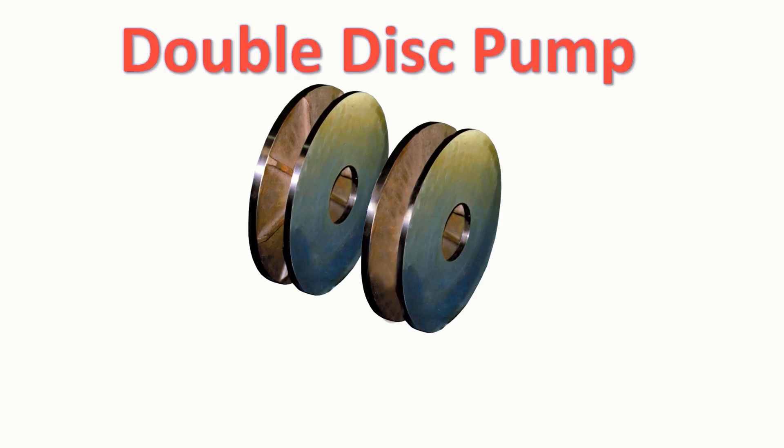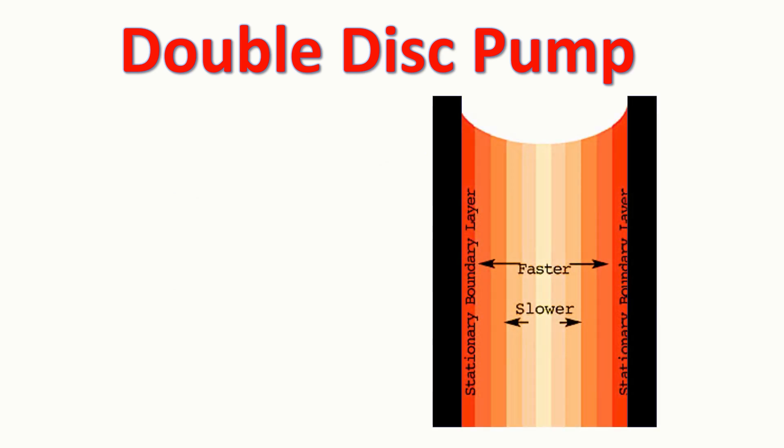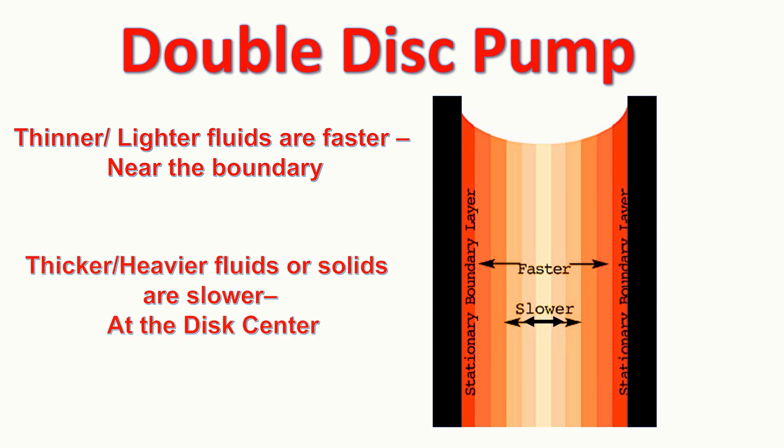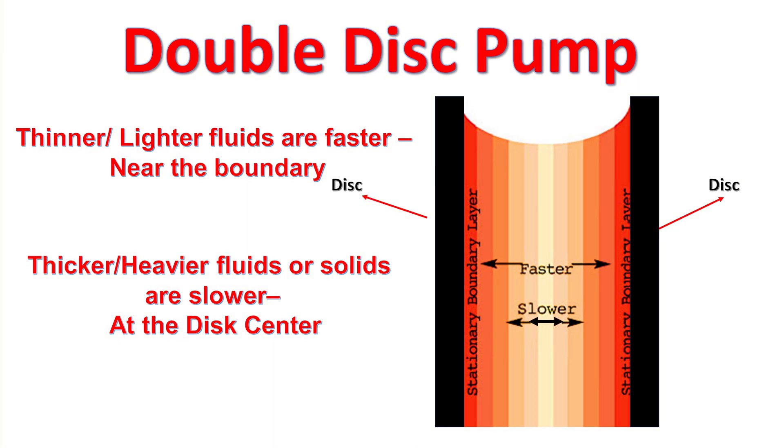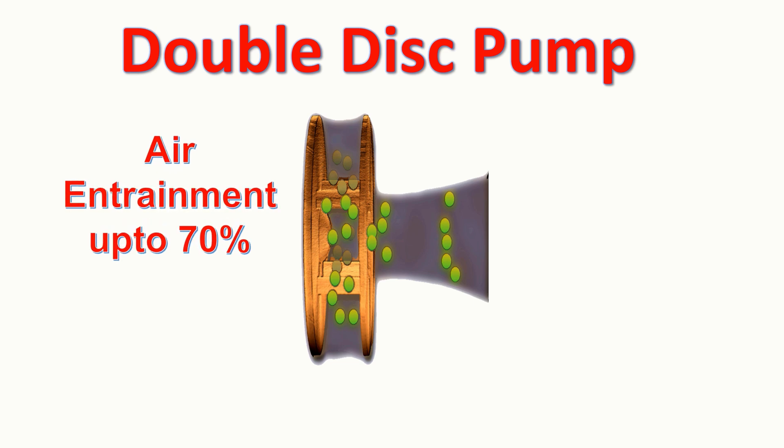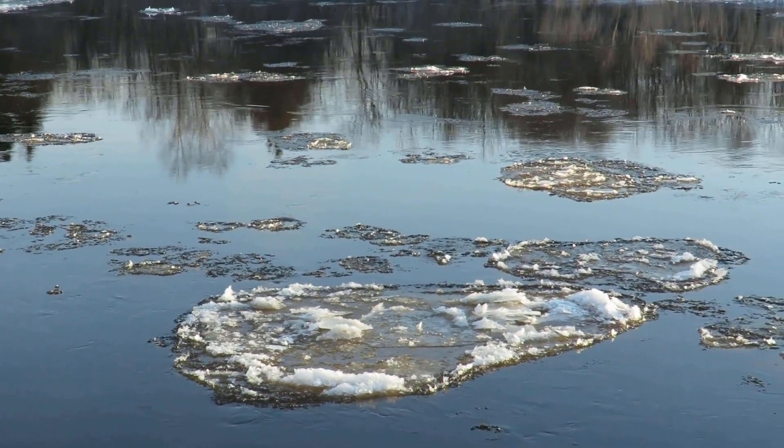Double disc pump. This four-decade-old technology pump uses viscous drag and boundary layer concept to pump the liquid. Boundary layer formation ensures that the thinner fluids or gases are nearer to the disc and thicker fluids go through the center of the disc. Due to this partition, these pumps are very effective in controlling the air entrainment up to 70% in volume. Hence, they are one of the go-to options for handling the scum.